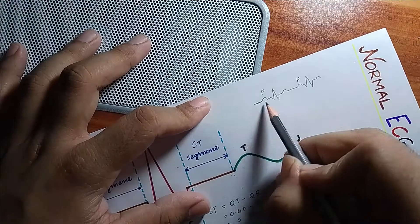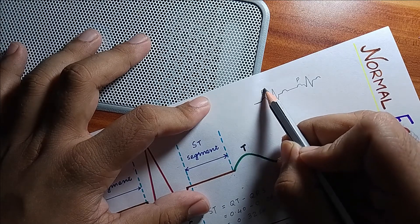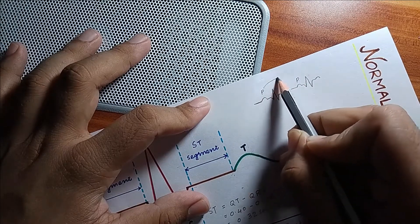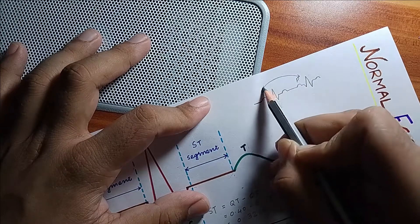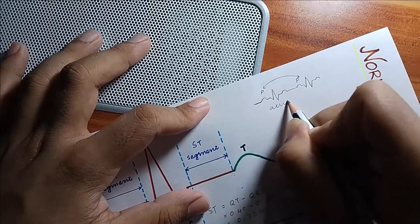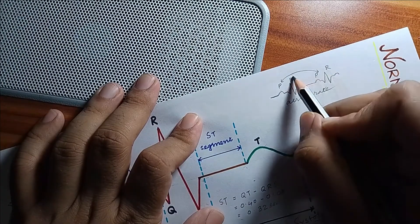Next is your PP interval. It is the interval measured between either the peaks or the beginnings of two successive P waves. It is measured for calculating the atrial rate. Now there is RR interval, which is the interval between two successive R waves.